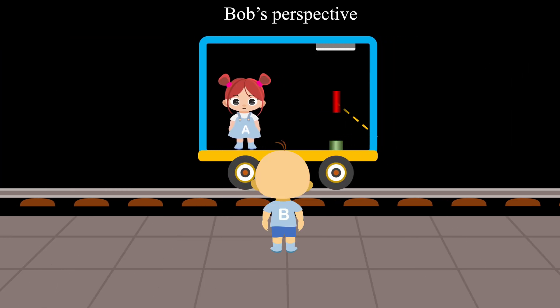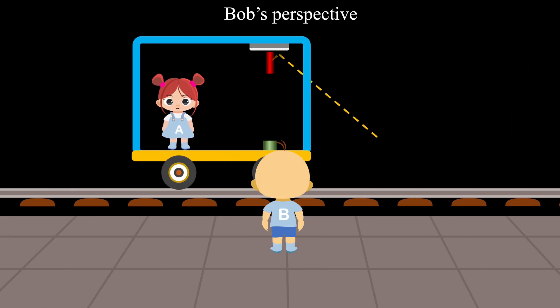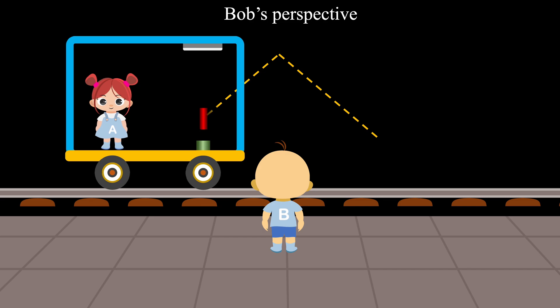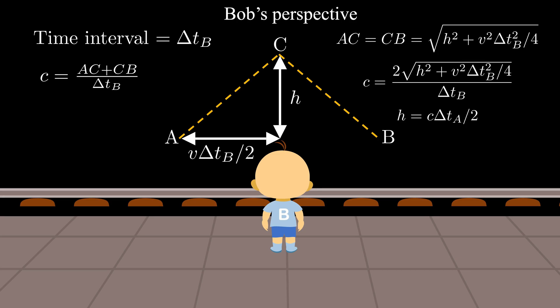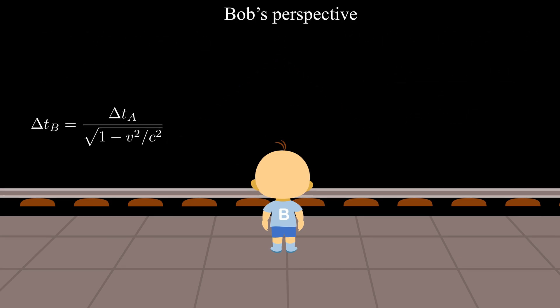However, to Bob, the train moves as the beam travels, making its actual path longer. Since the speed of light for Bob is still c, he must therefore record a longer time interval than Alice.